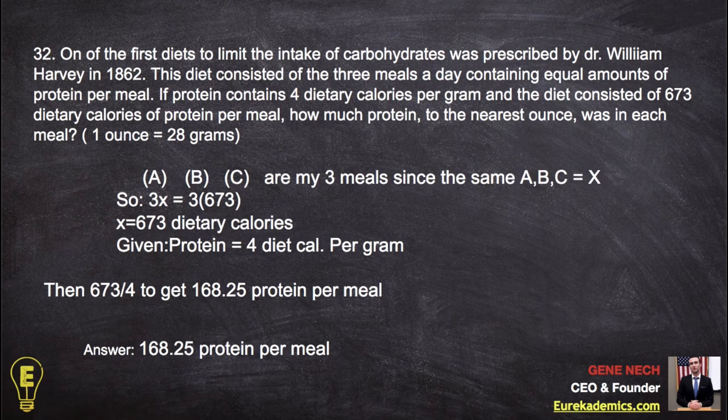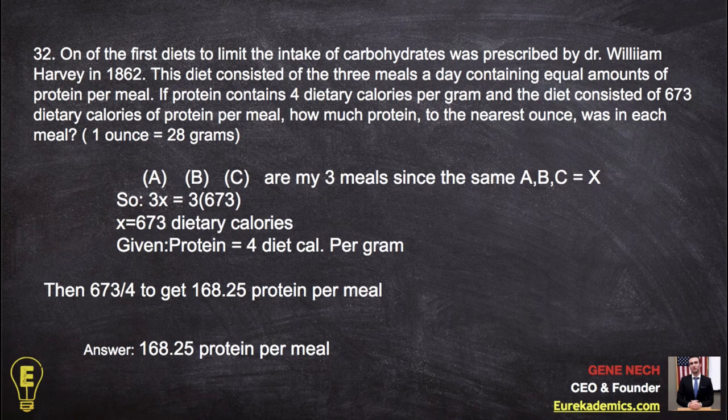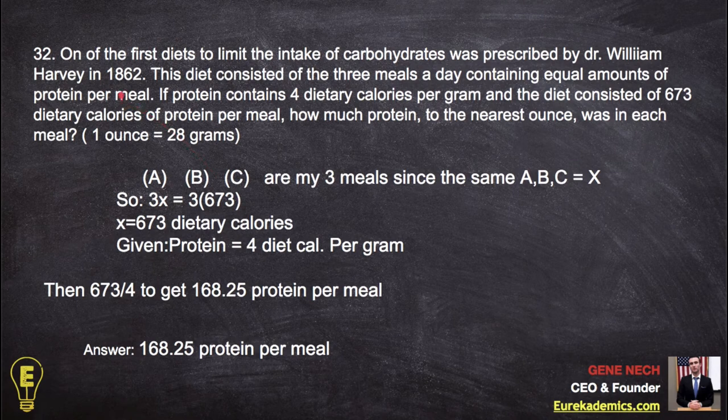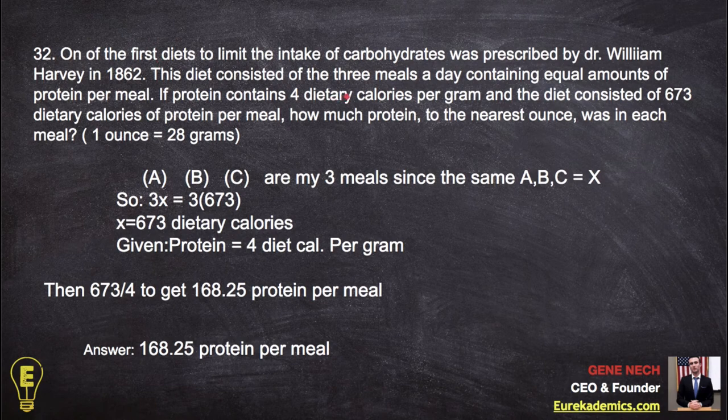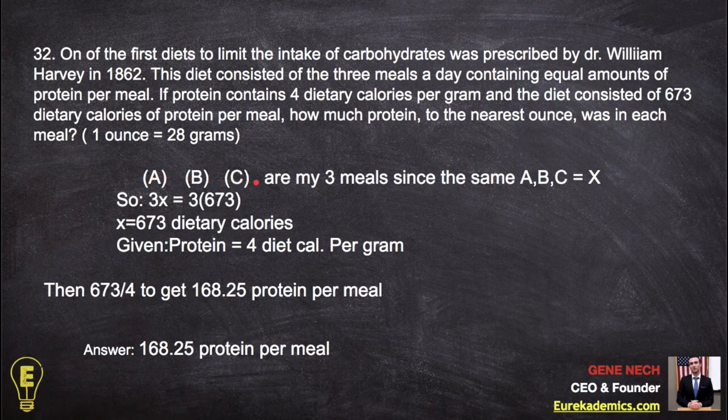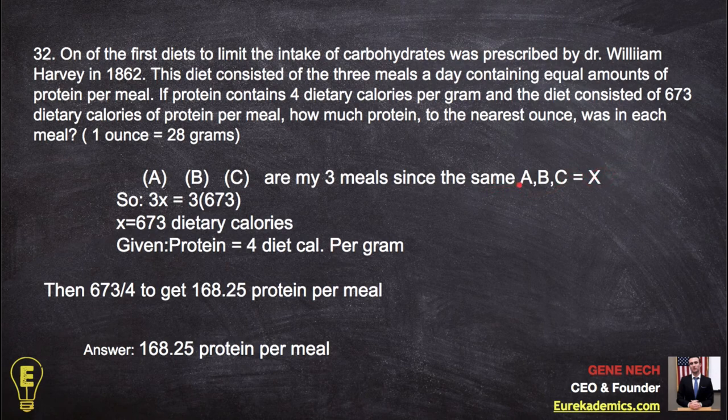Number 32. One of the first diets to limit the intake of carbohydrates was prescribed by Dr. William Harvey in 1862. This is history, so I'm going to discard it. I don't need it. The diet consisted of three meals a day containing equal amounts of protein per meal. Three meals a day, ABC, are my three meals a day. Since they're the same, equal amounts of protein, I'm just going to make it x. And if it's three meals, x plus x plus x, 3x, right? Good to go.